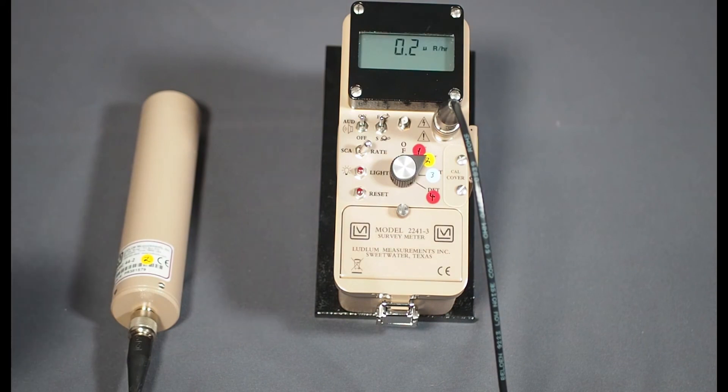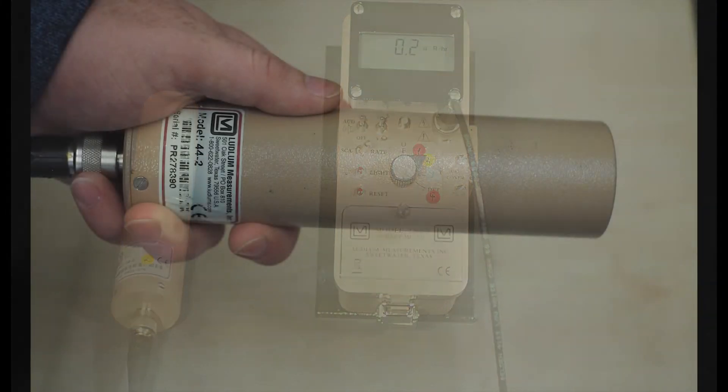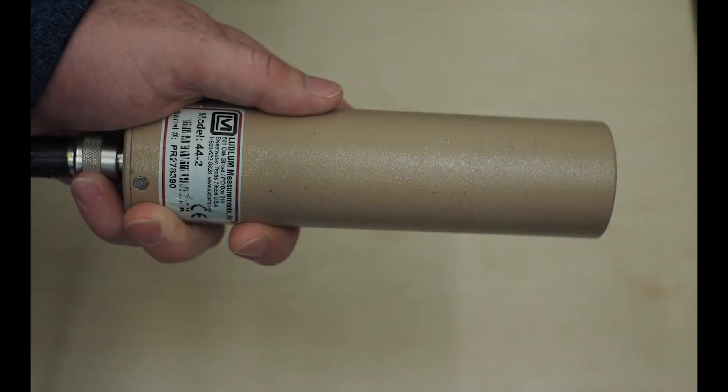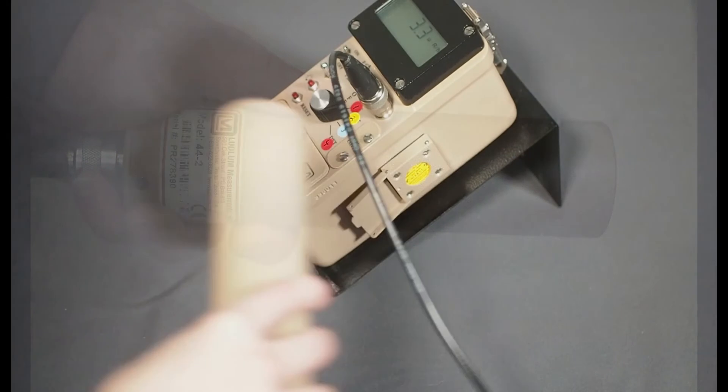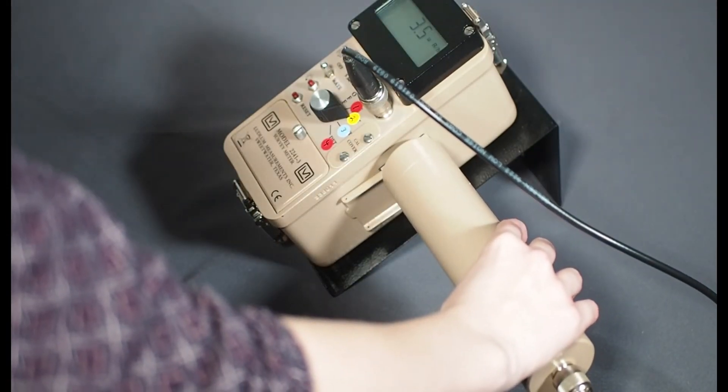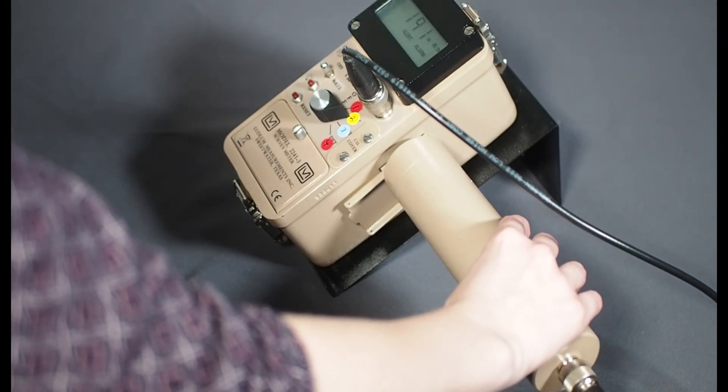The instrument is now displaying micro R per hour readings. Hold the 44-2 like a flashlight to make a measurement. If necessary, perform a check source test as was done on the detector 1 setting.